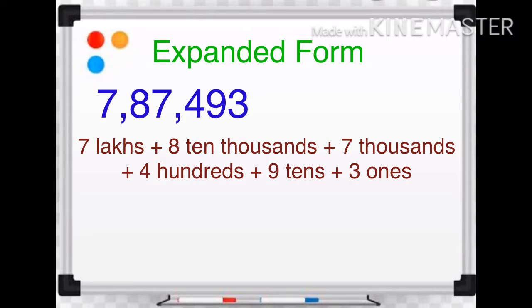7 lakhs plus 8 ten thousands plus 7 thousands plus 4 hundreds plus 9 tens plus 3 ones. Because 7 is at the place of lakhs, 8 is at the place of ten thousands, 7 is at the place of thousands, 4 is at the place of hundreds, 9 is at the place of tens, and 3 is at the place of ones.